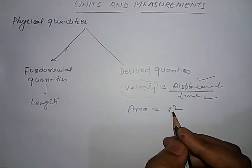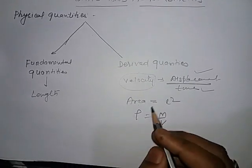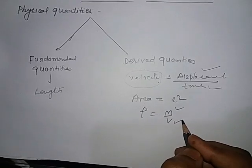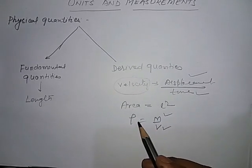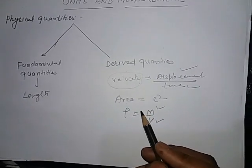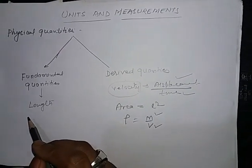Volume is L cubed. Density is mass upon volume, so density depends on mass and volume. Therefore, density is a derived quantity. But length, mass, and time do not depend on other physical quantities.